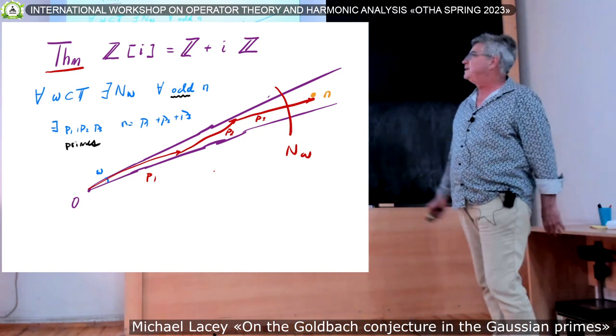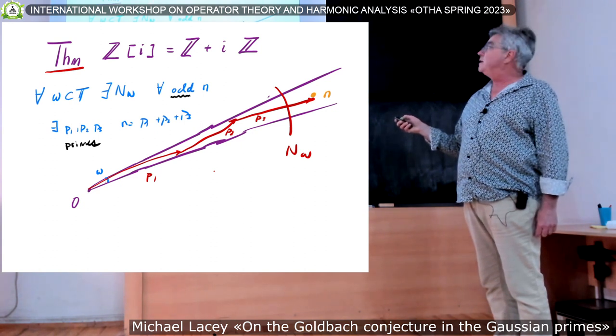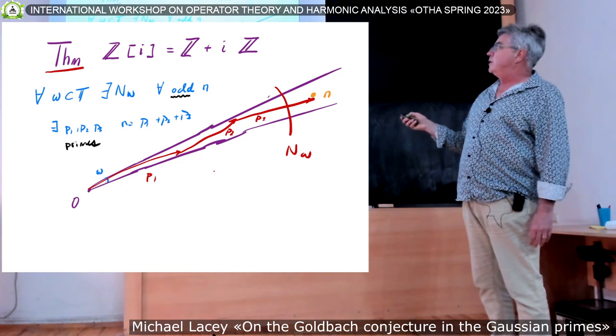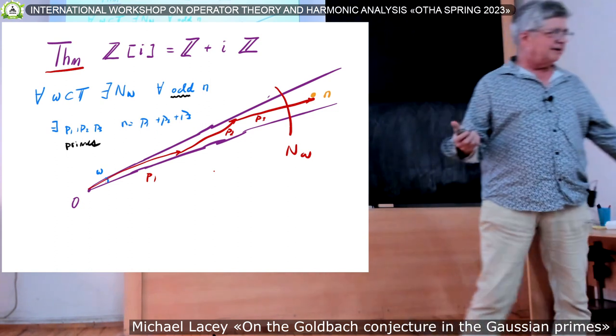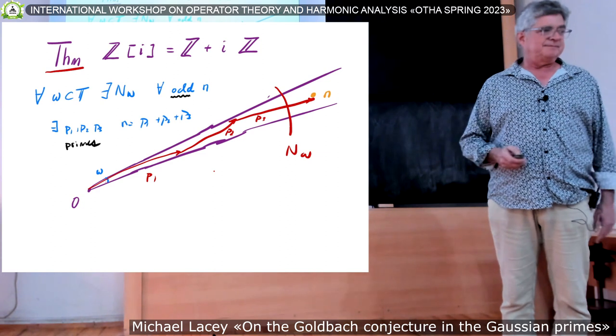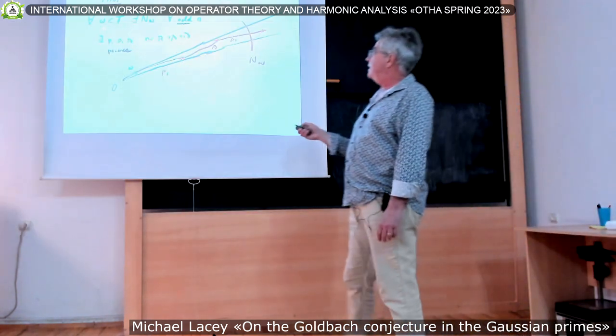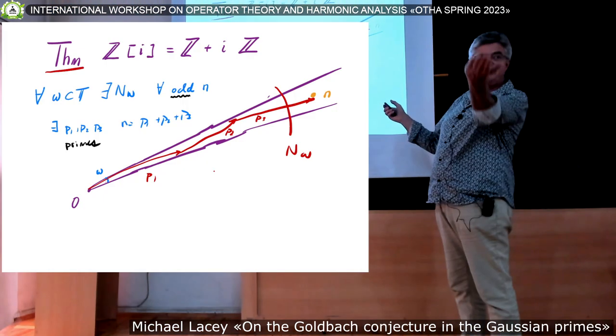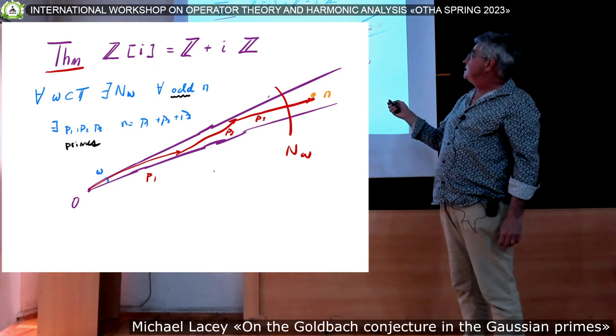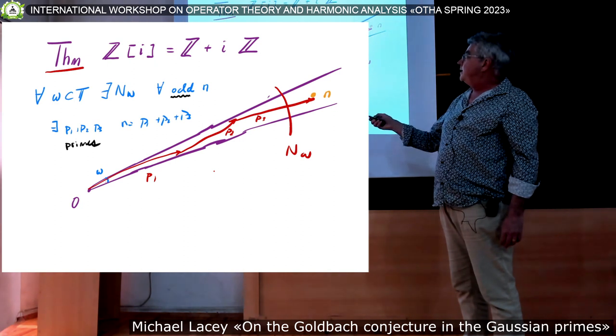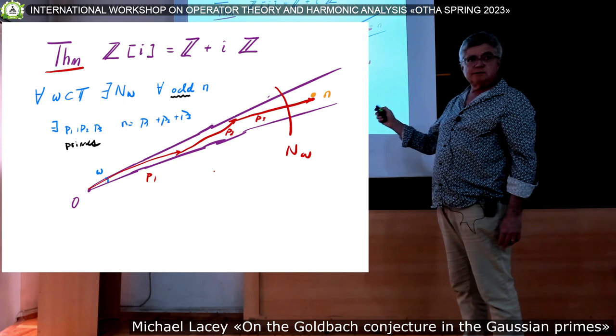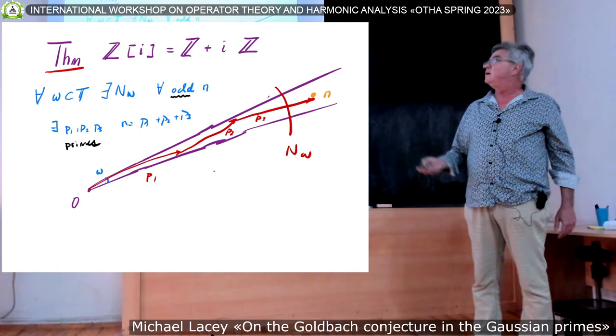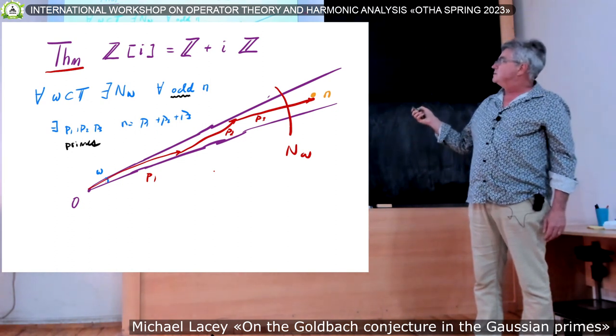Almost in a picture. The Gaussian integers are the integers in the complex plane, so z plus iz. In this setting, there is a notion of being even and odd. There's also a notion of being prime. In the Gaussian case, we can fix an arbitrary sector in the circle and then only speak of Gaussian integers whose argument is in that sector. So here is the sector omega, and it creates, and we root it at zero.